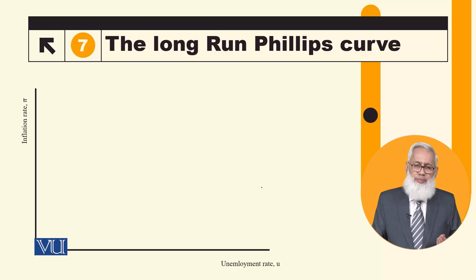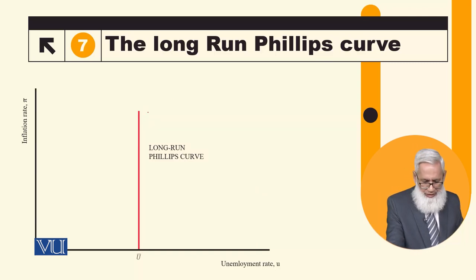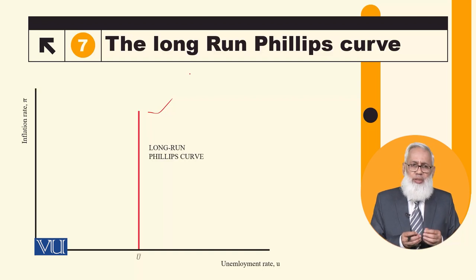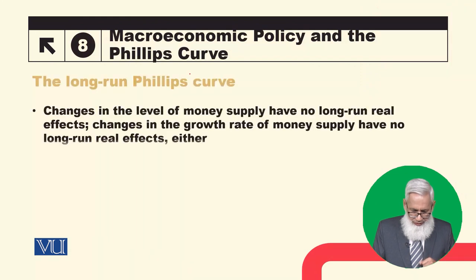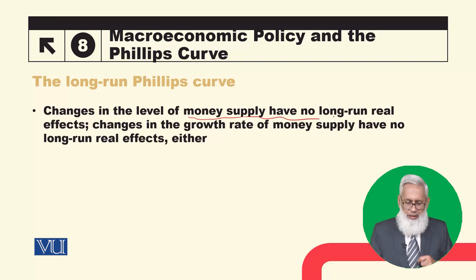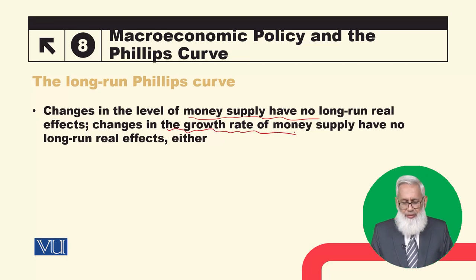In the long run, as values change — expected inflation changes and the natural rate of unemployment changes — the relationship between inflation and unemployment becomes vertical. This means that whatever the level of inflation, it will not affect the unemployment rate. The short-run curve is negatively sloped when we assume that the natural rate of unemployment and expected inflation are constant. Changes in the level of money supply have no long-run real effect — and even a change in the growth rate of money supply will have no long-run real effect.